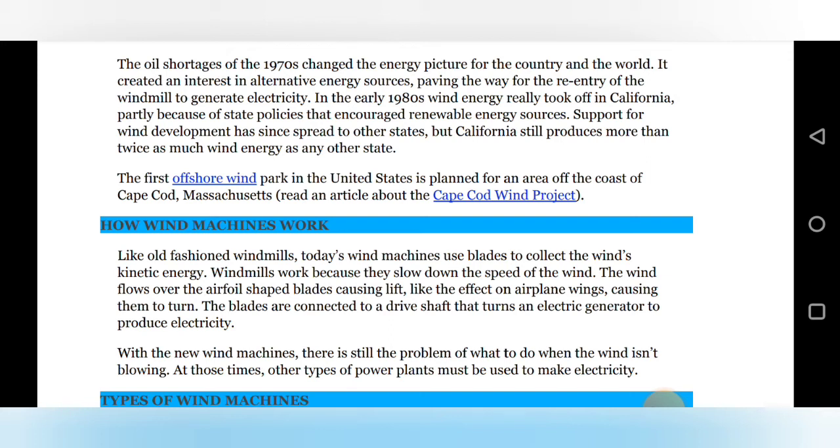With the new wind machines, there is still the problem of what to do when the wind isn't blowing. That means sometimes the wind gets still, wind flow is not able to move our blades. So what to do at that situation, that is the question in front of us. So at those times, other types of power plant must be used to make the electricity. That means though it has some advantages, it also has some disadvantages. Every system has some limitations and every system has some advantages. So that is one of the limitations of windmill.